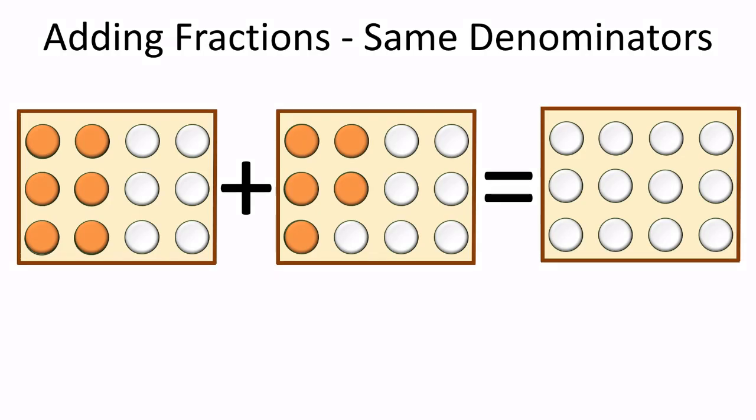We have 2 boxes with oranges. In the first box, we have 6 oranges, but there is space in the box for 12 oranges, so we can write it as 6 twelfths. The second box has 5 oranges, but there is space for 12 oranges, so we can write it as 5 over 12.